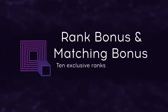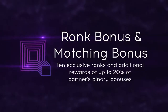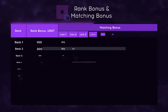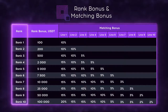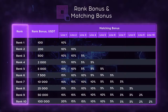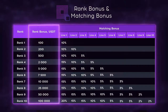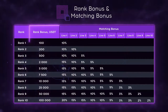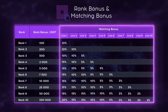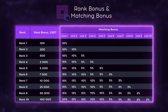And finally, let's take a look at rank achievement process and matching bonuses. Qubit Tech's affiliate program offers 10 exclusive career ranks. Each new rank achieved comes with a reward starting at 100 USDT. In addition to that, every new rank achieved offers improved conditions for receiving matching bonuses.